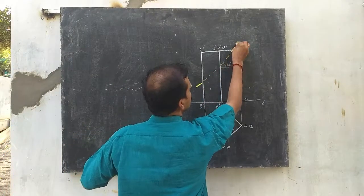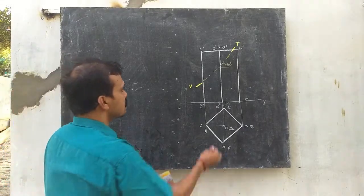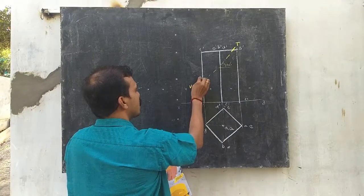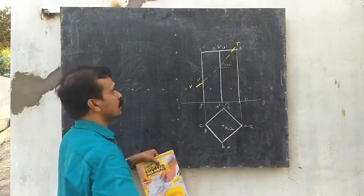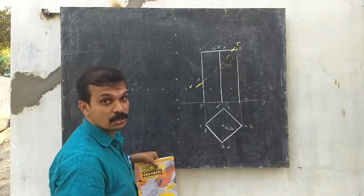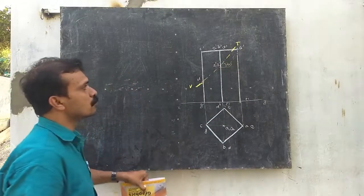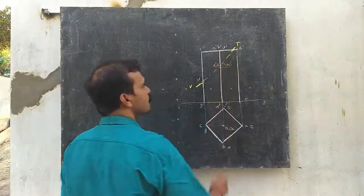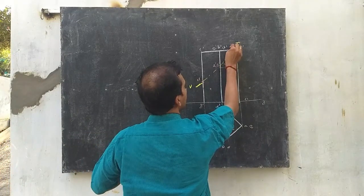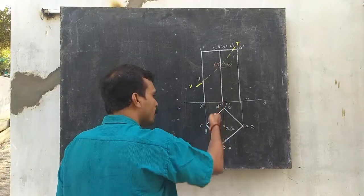You can see the section plane intersects the lateral edge C'G' at point 1'. Two more lateral edges are intersected: B'F' gives point 2', and D'H' gives point 3'. The plane also intersects the base edges A'B' and A'D' — those belong to the top base edges — giving points 4' and 5'.